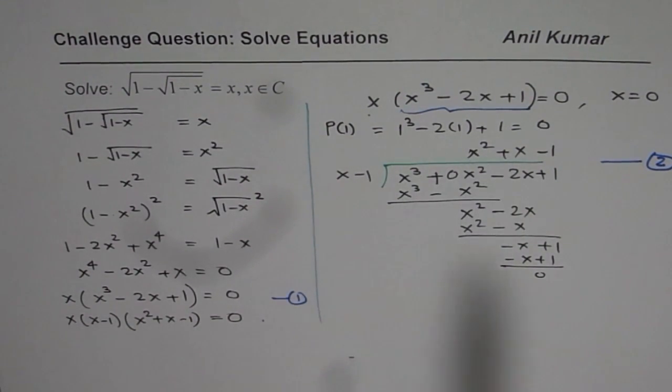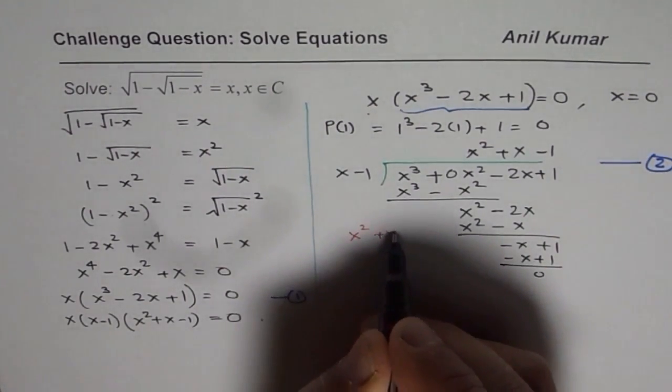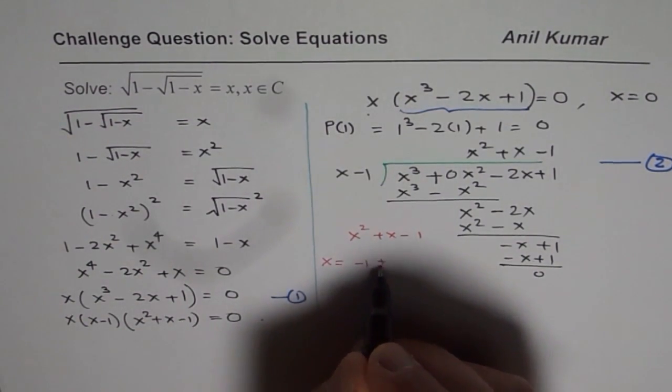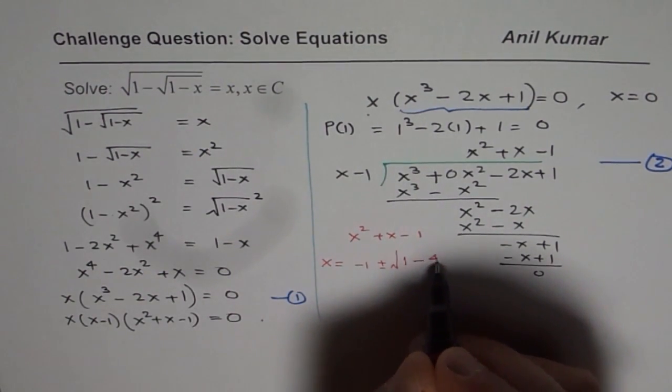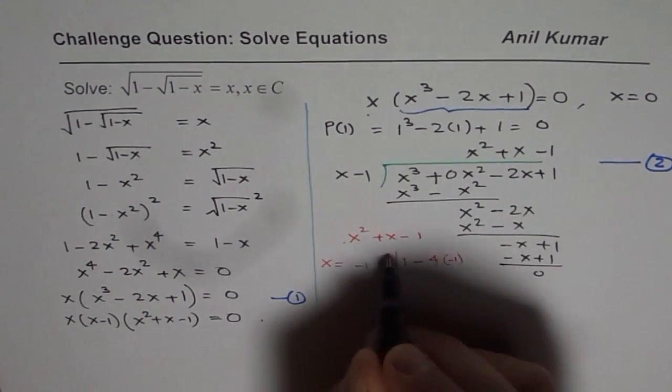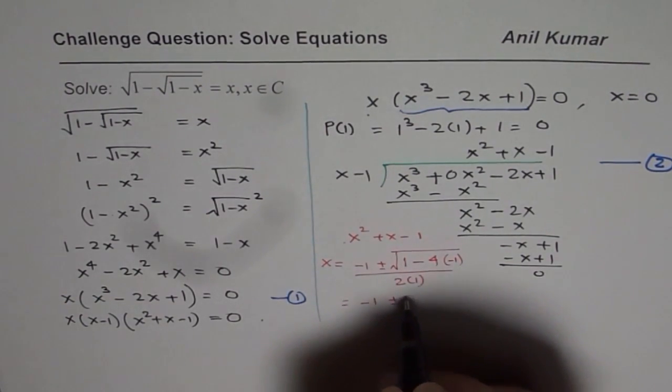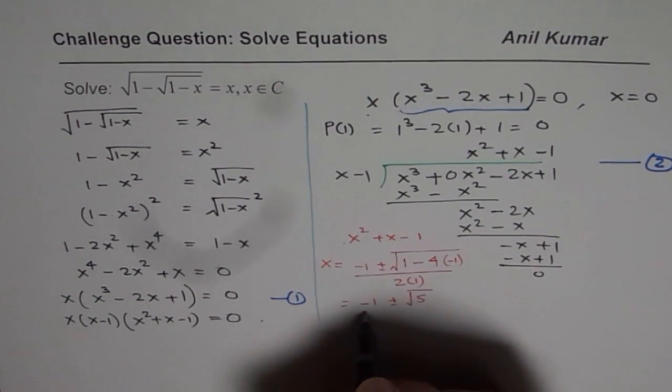Now to find other roots, we could actually use quadratic formula. So we will use quadratic formula to solve for x square plus x minus 1. Now in this case, x equals minus of b, which is minus 1, plus minus b square, which is 1, minus 4ac. So 4 times a is 1, c is minus 1, divided by 2 times a, which is 1. And that gives us minus 1 plus minus square root of 1 plus 4 is 5, divided by 2.